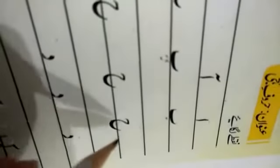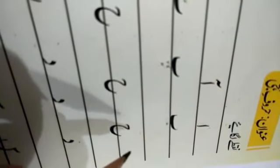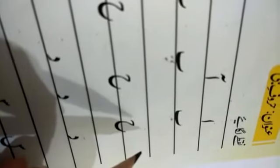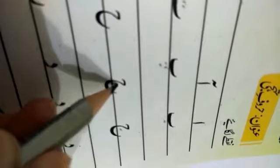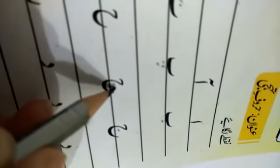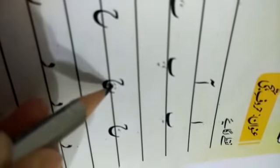Now you will tell me how many dots of jim. There will be one dot in the belly of jim. One dot. And how many dots of che? There will be three dots inside the che. Alright.